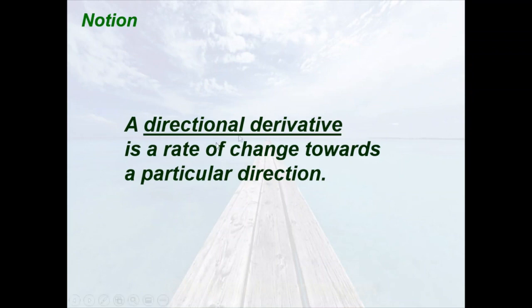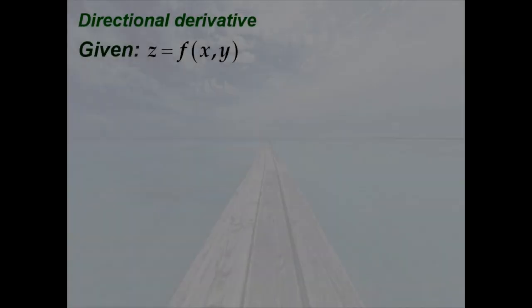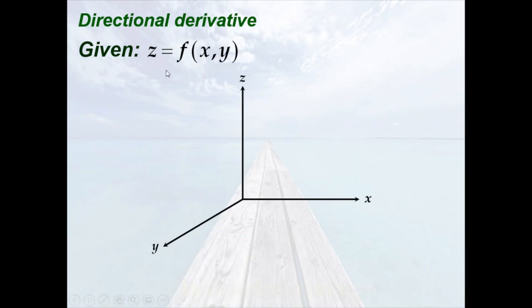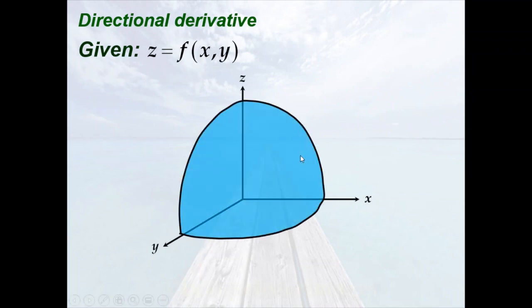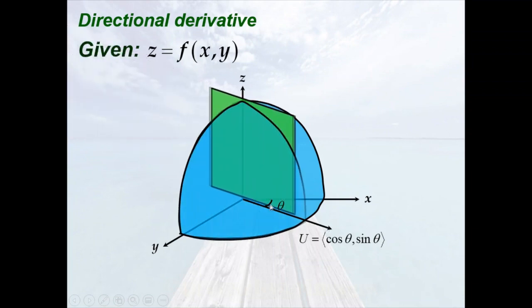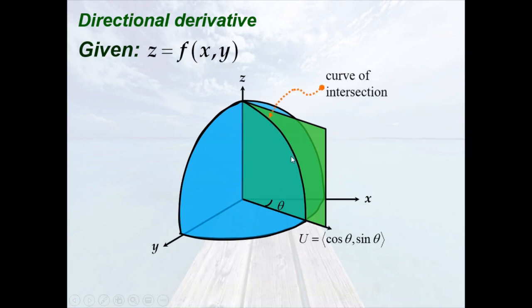That's the role of the directional derivative. A directional derivative is just a rate of change towards a particular direction. For an illustration, let us consider a surface defined by z equals f of x, y, and a unit vector in the direction theta. If we have a plane containing the unit vector in the direction theta, its curve of intersection with the surface is given. The slope of the tangent line passing through a point on the surface, or the rate of change of the function value at that point in the direction theta, is just the directional derivative.